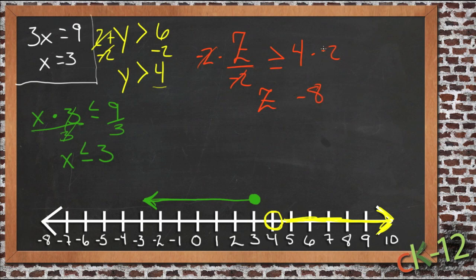But since we multiplied by a negative, this is the only difference between inequalities and equations as far as process. Since we multiplied by a negative, we switched the direction of this sign. So now we have z is less than or equal to negative 8. So we come over here to negative 8. It says it can be negative 8 also, so we're going to put a dot there. It's less than or equal to, so we're going to shade off to the left. It could be anything smaller than or equal to negative 8.